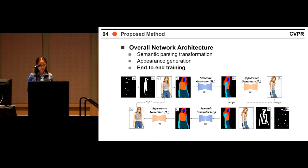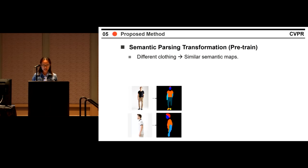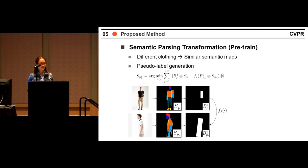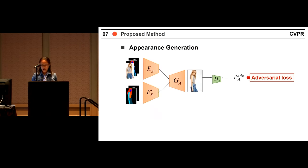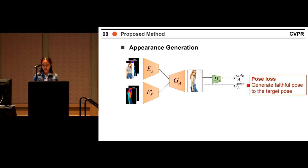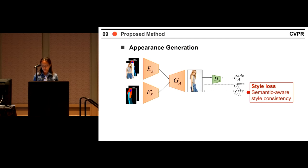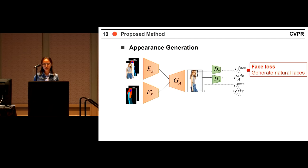We first train the semantic parsing transformation. Since semantic maps don't associate with clothing textures, people in different clothing images share similar semantic maps. We define a simple but effective metric to search semantic maps as pseudo-labels to pre-train the semantic generator, trained using cross-entropy loss with pseudo-labels and adversarial loss. For appearance generation, a discriminator helps generate realistic images; pose loss with a pose detector ensures faithfulness to the target pose; a semantic-aware style loss ensures style consistency between corresponding semantic regions; and another discriminator helps generate natural faces.